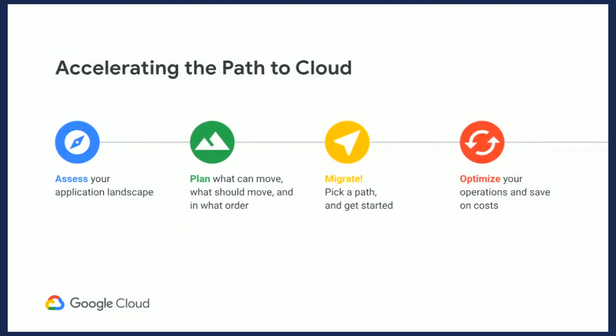The common question is: how do I start? It starts with assessing your applications — what they are and what they're doing. Then planning your move and understanding dependencies; some applications may be cloud-ready while others may not. Plan your order and pick a path — whether migrating, lifting and shifting, or re-architecting. Then optimize your applications and operations with a constant feedback loop. We have a large number of customers modernizing and migrating to GCP, and it's my privilege to invite John Sherwood, VP of Engineering from CBS Interactive, to share his journey.